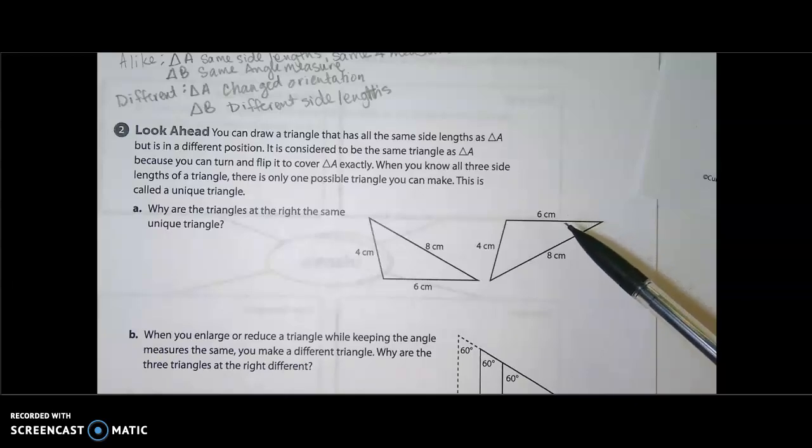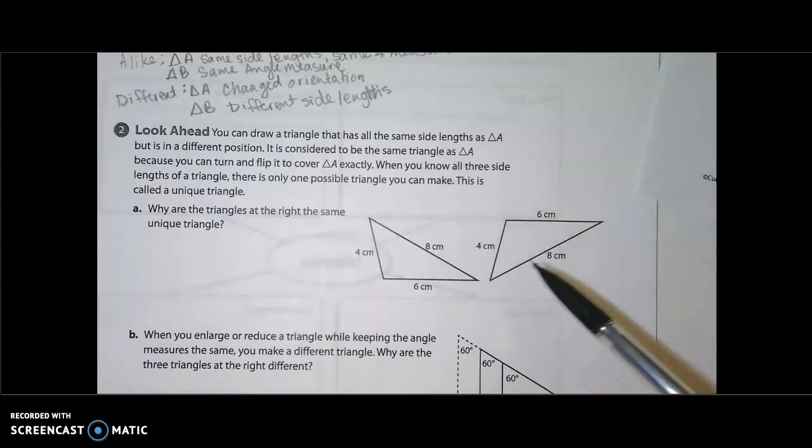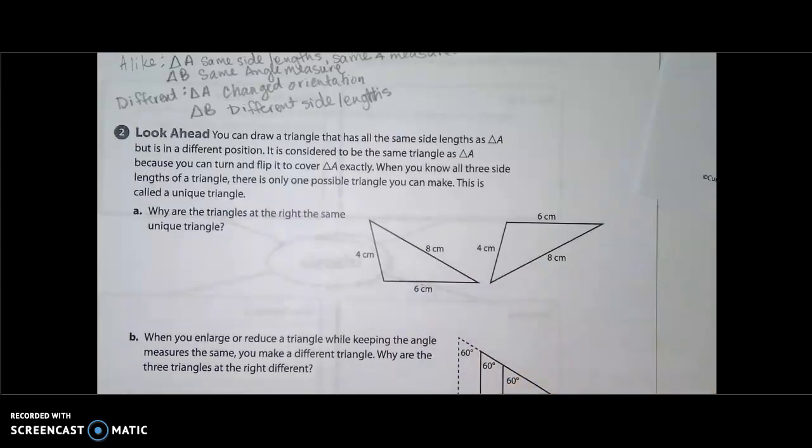So what that is saying is just because I draw the same side lengths, just in a different orientation, does not mean I have two different triangles. They are the same triangle. They're just drawn in a different order, right? But if I reflect it, rotate it, and put it back on top of the original triangle, point for point, it is going to match. We call that congruent.